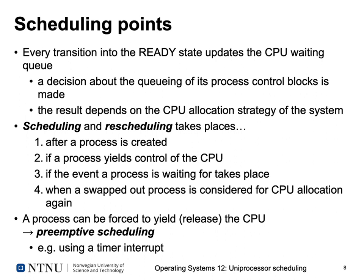Scheduling and rescheduling takes place: first, after a process is created; second, if a process yields control of the CPU voluntarily; third, when the event a process is waiting for takes place — moving from blocked to ready; and fourth, when a swapped-out process is considered for CPU allocation again. These four cases correspond to the state transitions in the diagram on the previous slide.